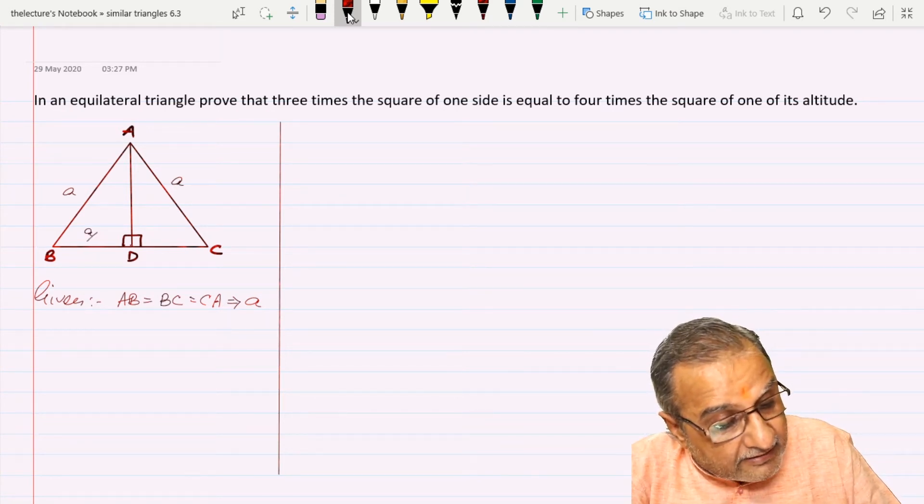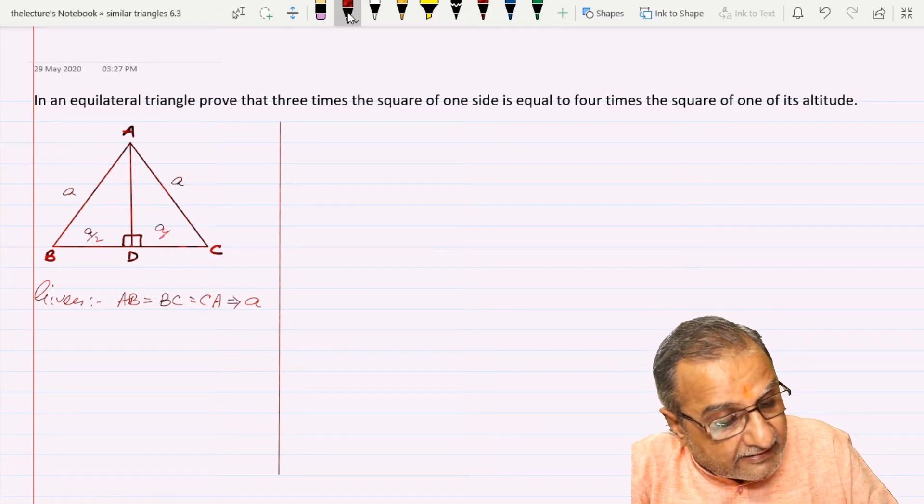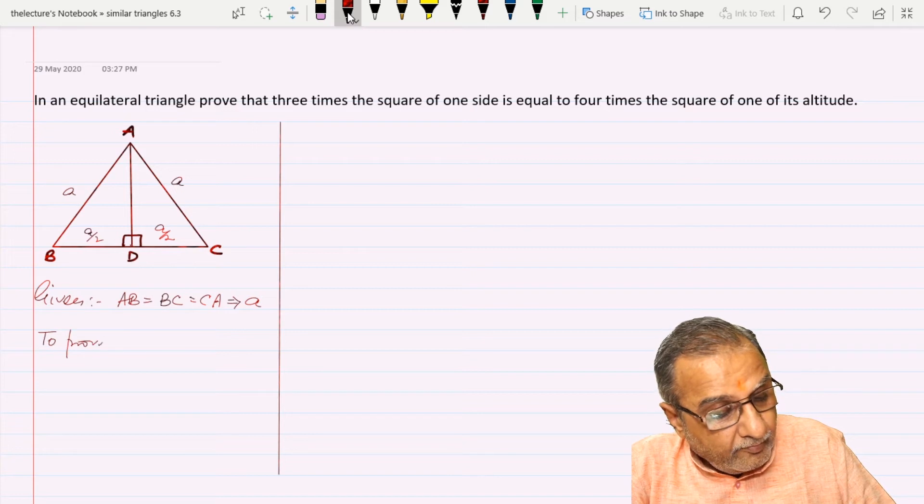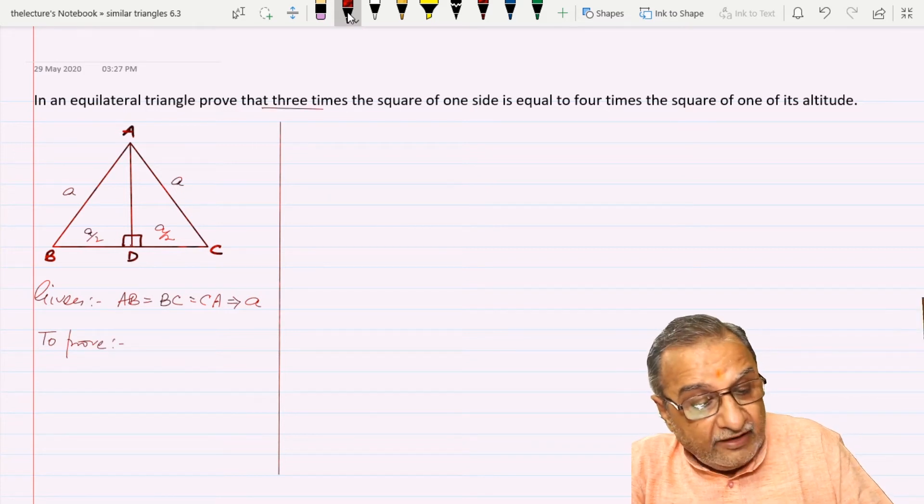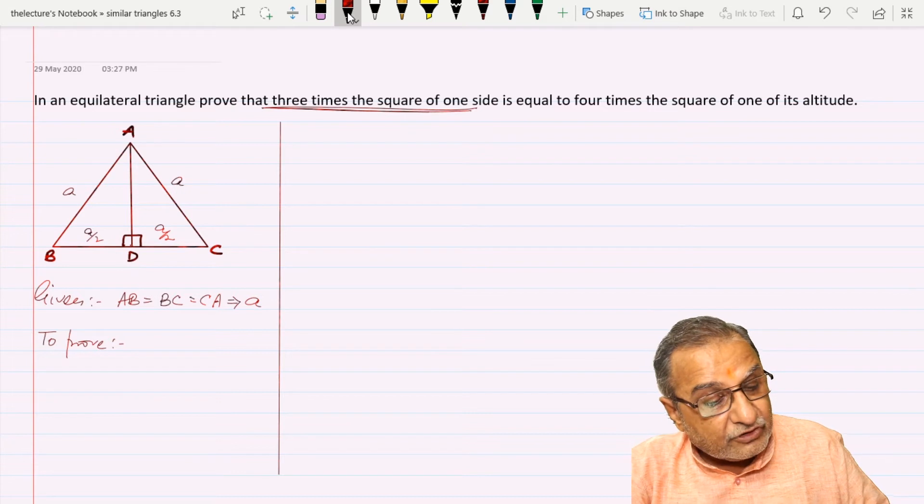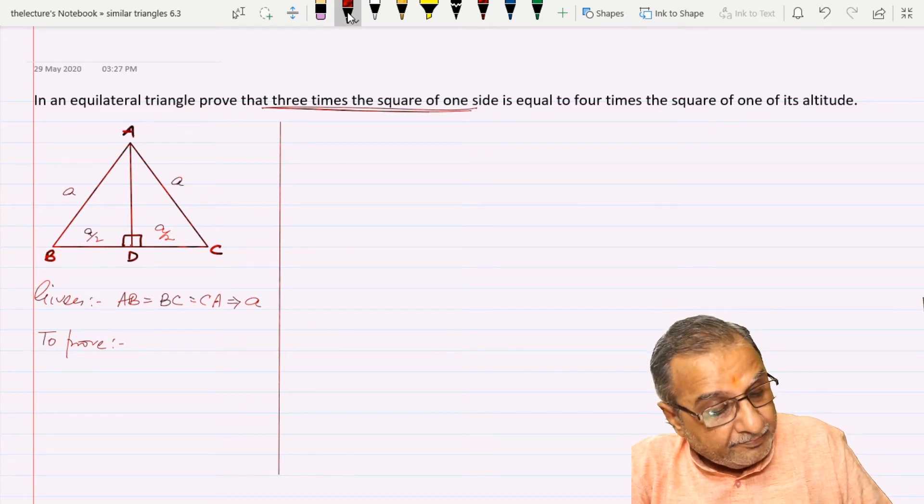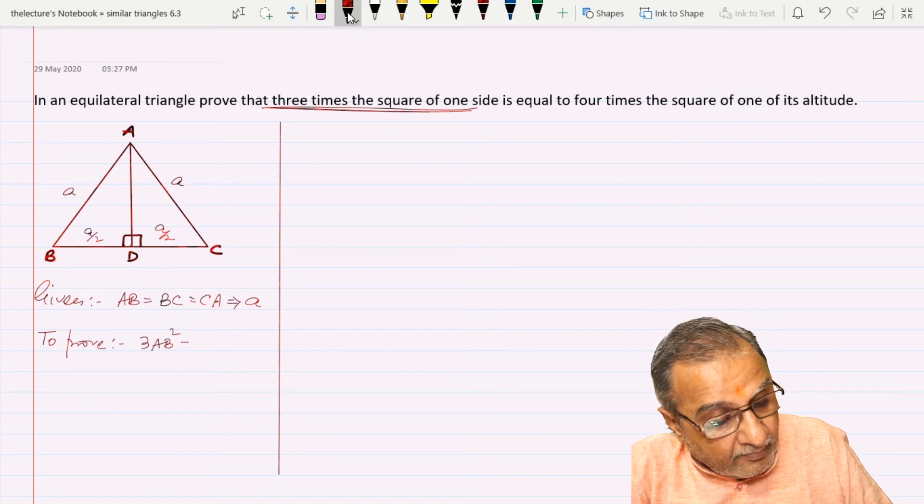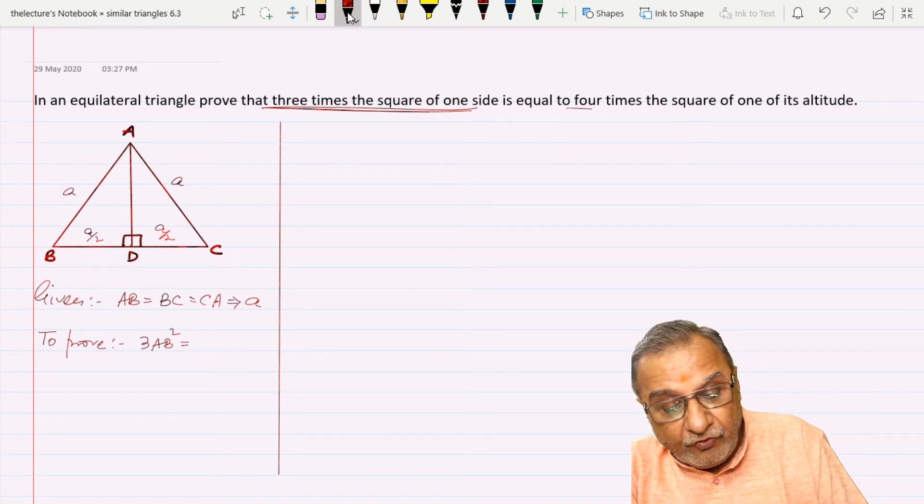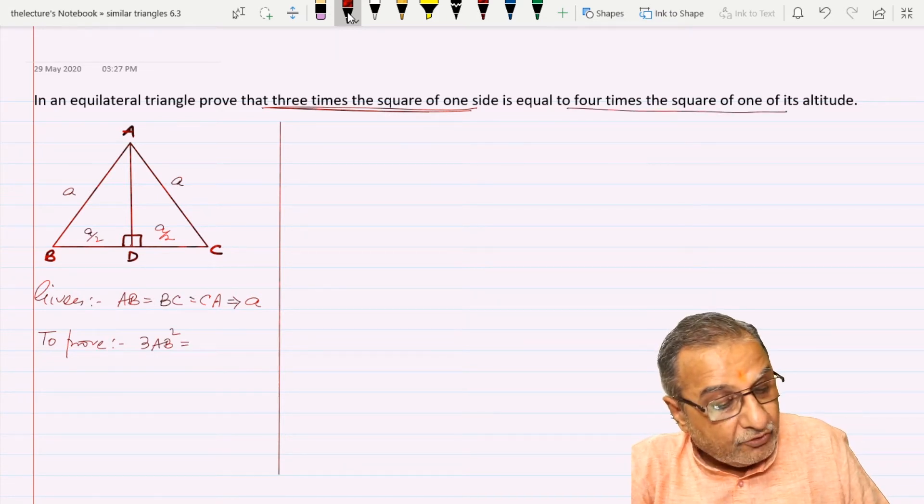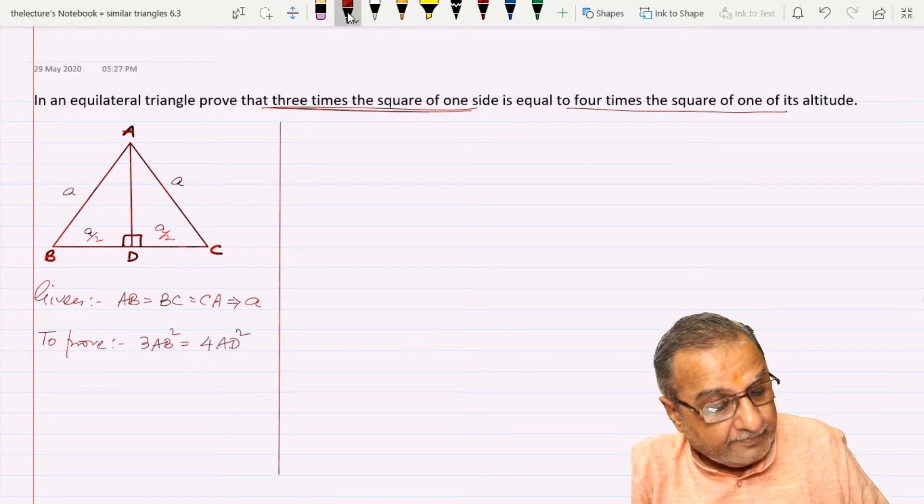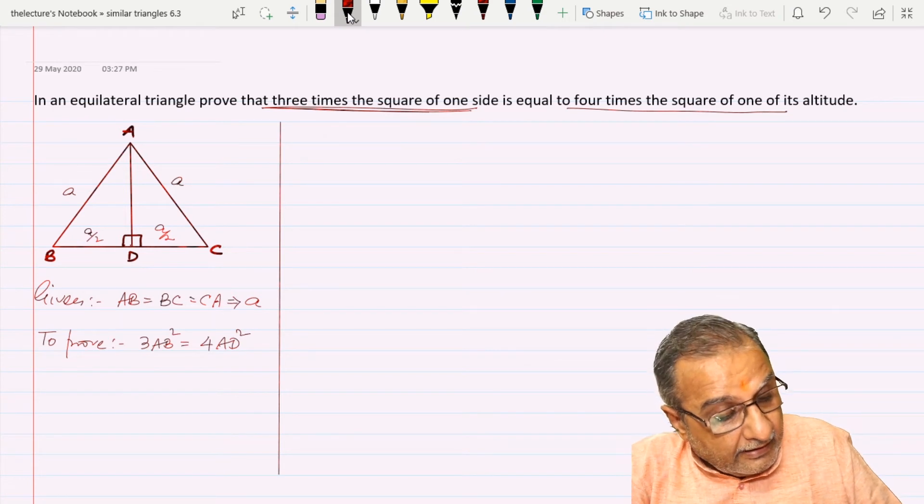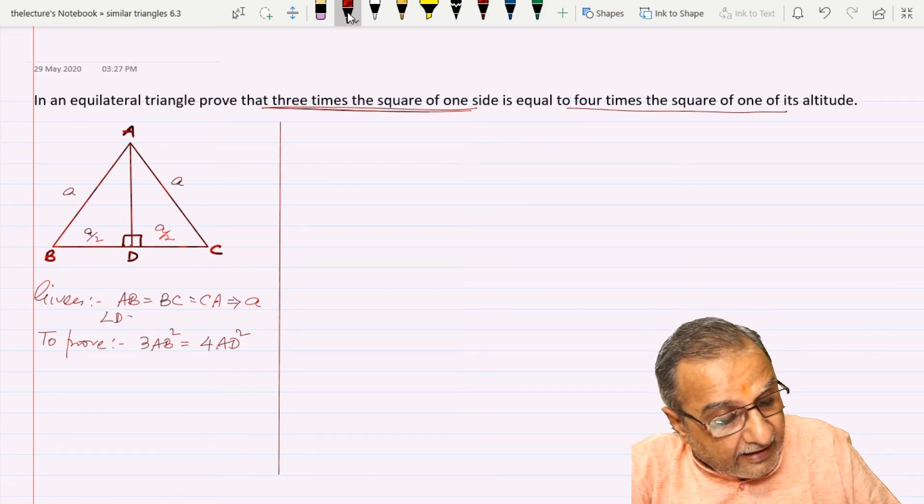That is why BD is A by 2 and CD is A by 2. To prove: three times AB squared equals four times AD squared, where angle D is 90 degrees.